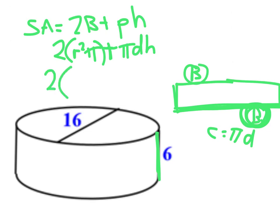Two, radius squared. Well, if it's 16 all the way across the circle, then it's 8 halfway across the circle. So that would be 8 squared times pi plus pi times diameter times a height of 6.